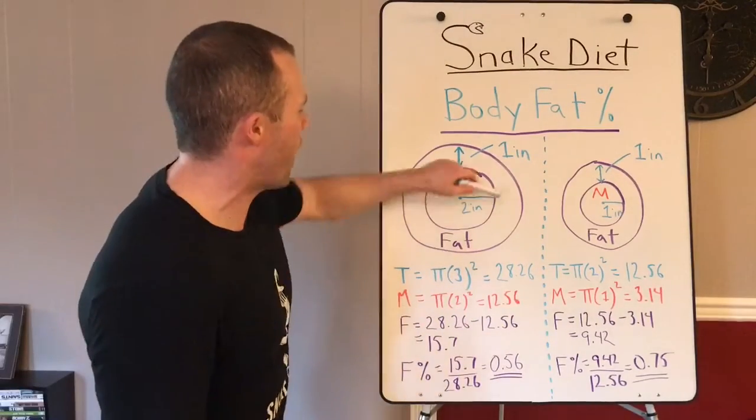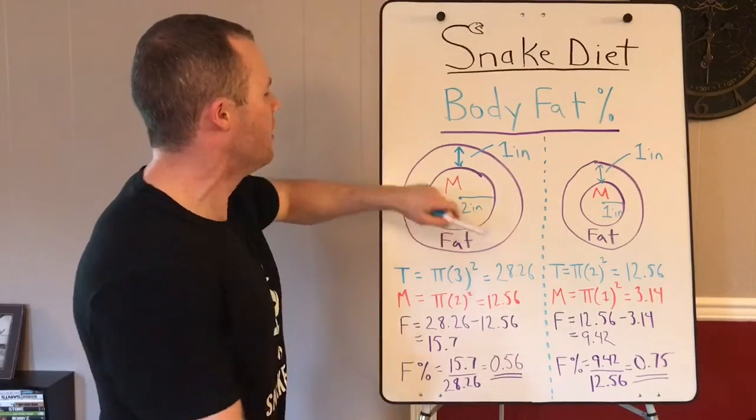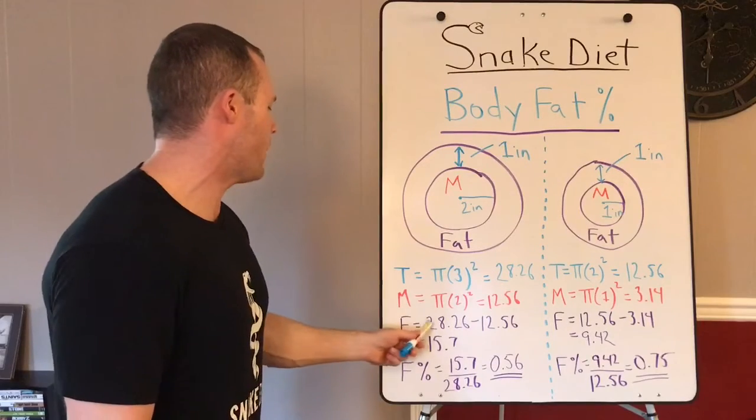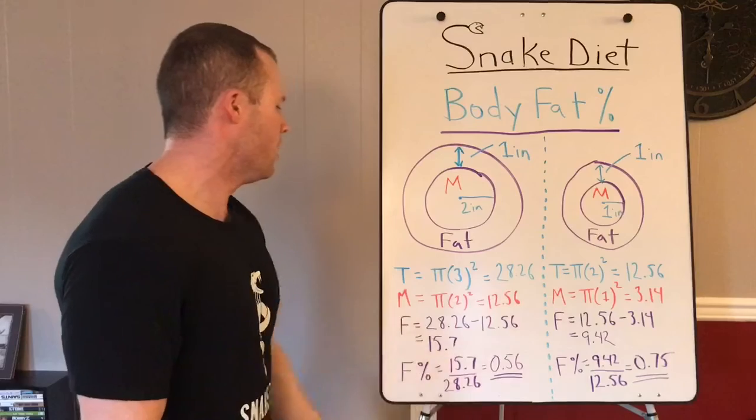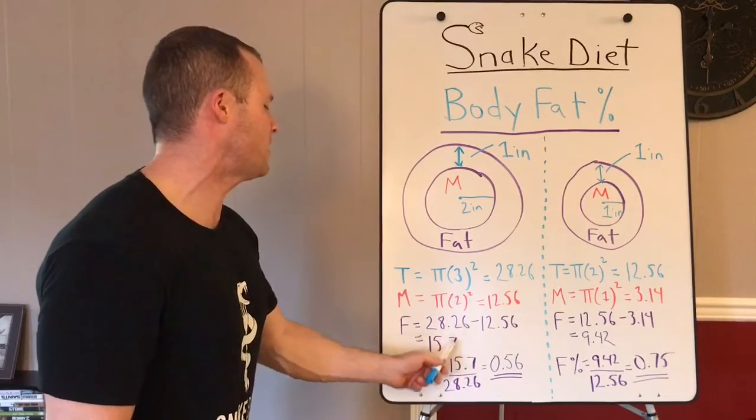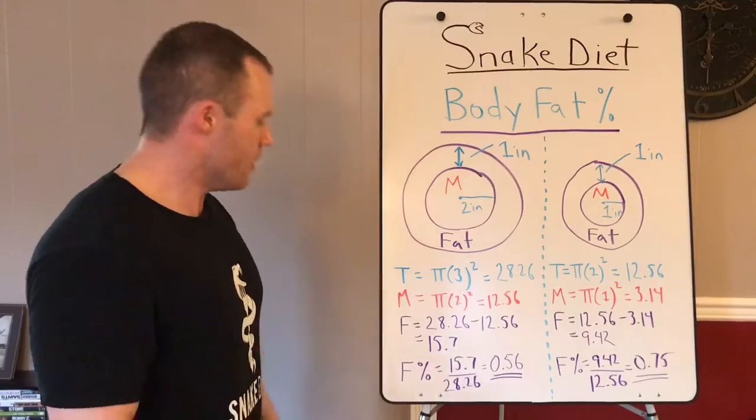Now to figure out the fat, the fat is the outer donut. We got to go the whole area minus the inner area which is the muscle. So 28.26 which is the whole area minus 12.56 equals 15.7 for the total fat.